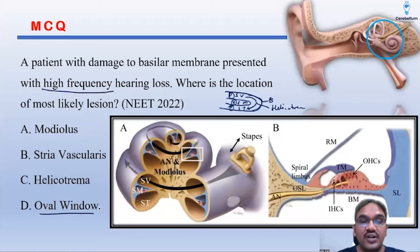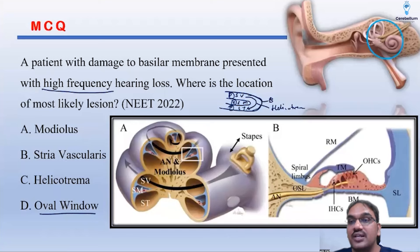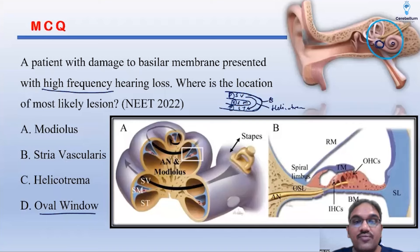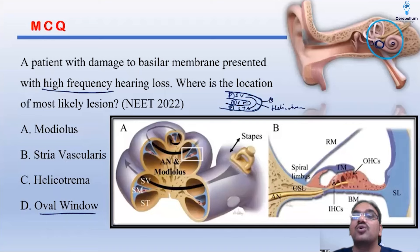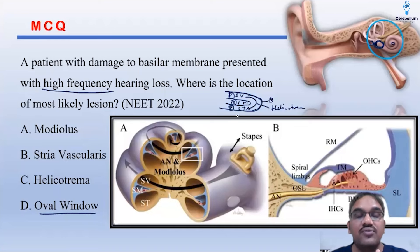So the answer is the oval window. The oval window is located at the basal coil of the cochlea — this is the basal coil, and this is the apical coil. So the location of the most likely lesion should be near the oval window, which is the basal coil of the cochlea. That is why high frequency hearing loss is affected.